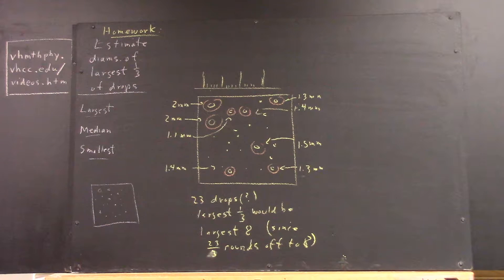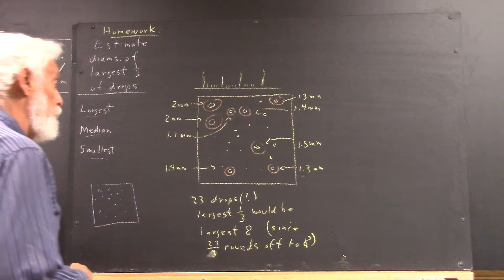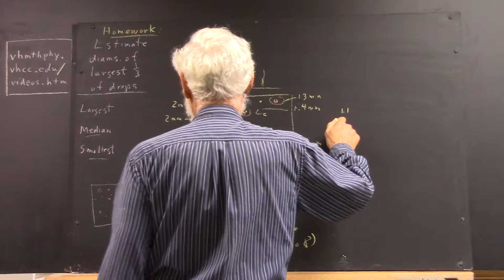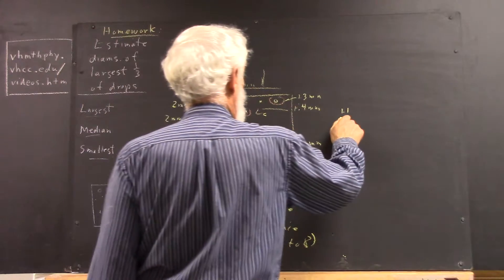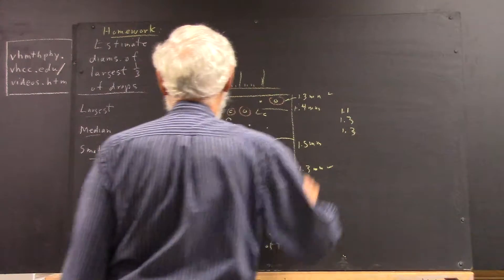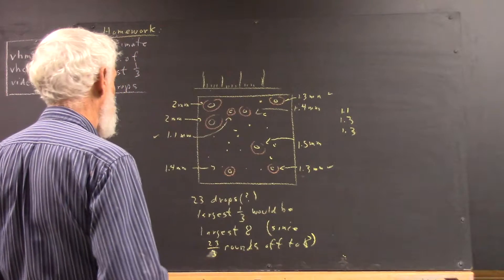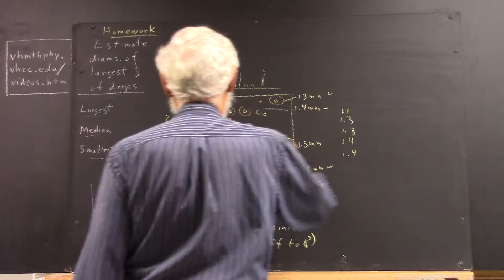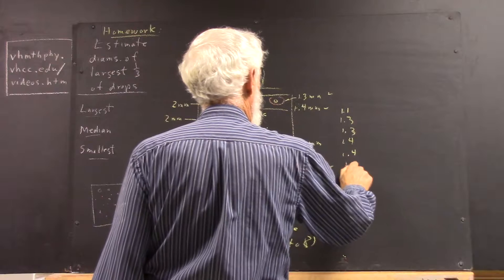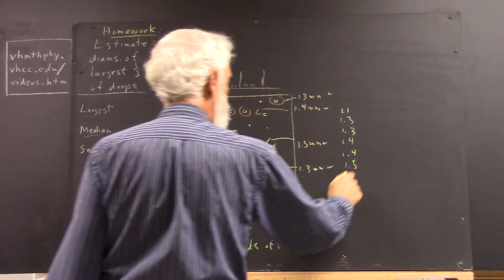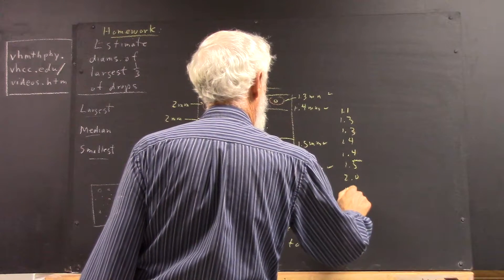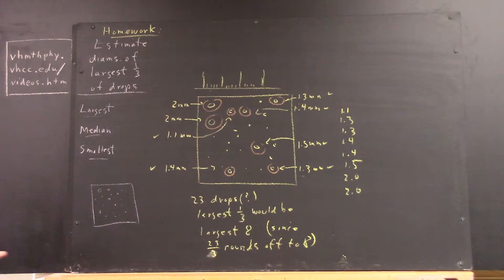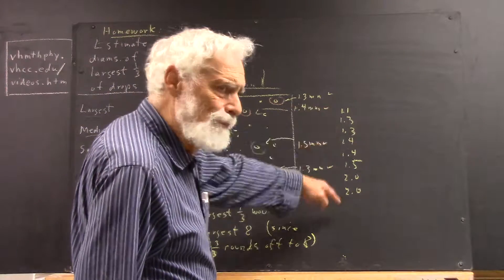So if that was my picture, then the largest 1⁄3 of the drops would be listing from smallest to largest. 1.1, okay, that takes care of this one. And then I've got a couple of 1.3s. There's one and there's one. And I don't see any more 1.3s, but I've got a couple of 1.4s. Got those. And then I've got a 1.5, so I got that. That's six of them. And then I've got a couple of 2s. We'll call that 2.0, although that last significant figure, the whole tenth thing isn't totally accurate, but reasonable, okay?